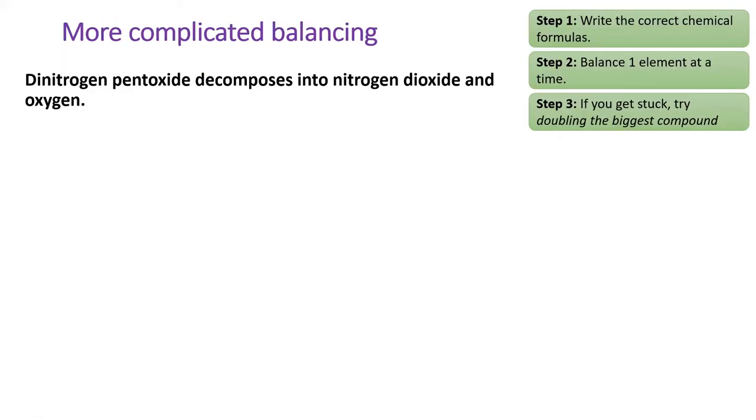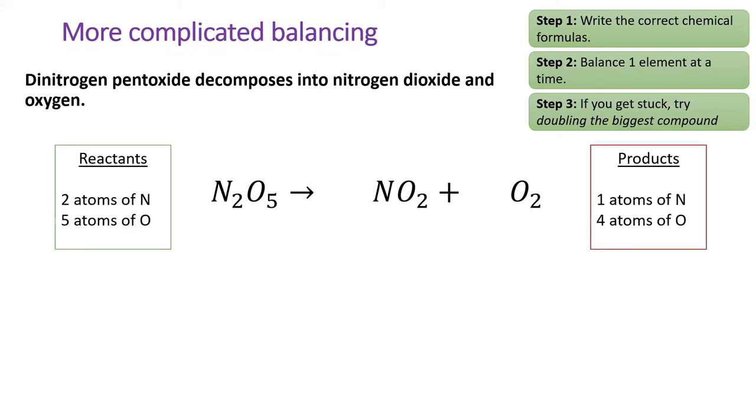Time for a practice problem. Follow along as I write a balanced equation from the following description: dinitrogen pentoxide decomposes into nitrogen dioxide and oxygen. First, we need to translate the names into formulas. Dinitrogen pentoxide is N2O5, nitrogen dioxide is NO2, and oxygen is a diatomic molecule O2. Once we've done that, we'll count up the elements on each side and start adding coefficients until it's balanced.